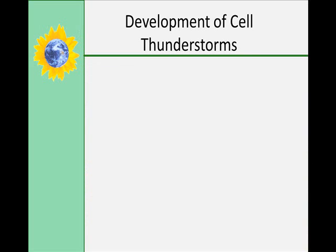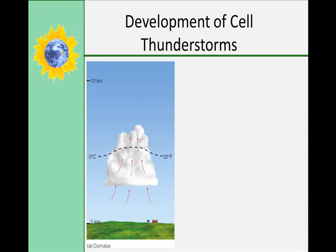Cell thunderstorms are so common, let's talk about how they develop. The first stage is called the cumulus or growth stage. There's an updraft where warm and moist air gets uplifted, it expands and condenses through the adiabatic process, and forms towering clouds. Latent heat gets released, meaning the temperature in the cloud is higher than outside. The air keeps rising and updrafts are strong so cloud droplets remain suspended. There's usually no precipitation or lightning during the cumulus stage.